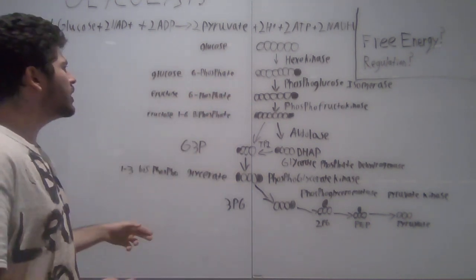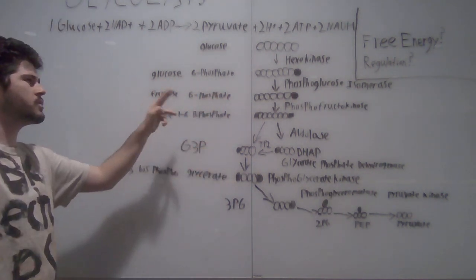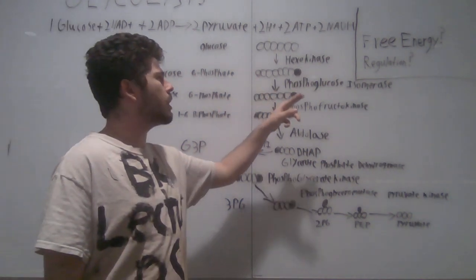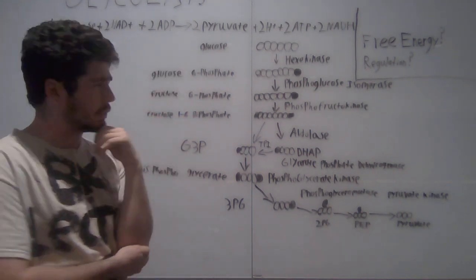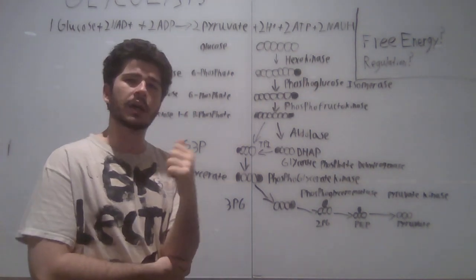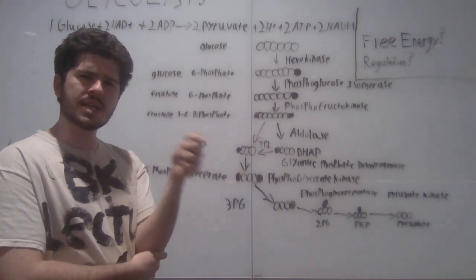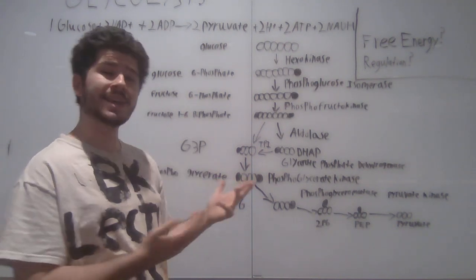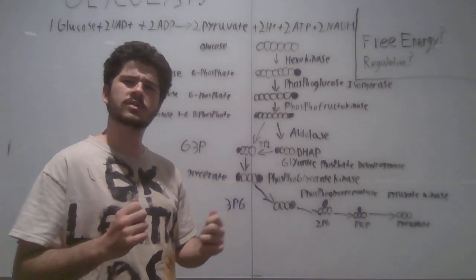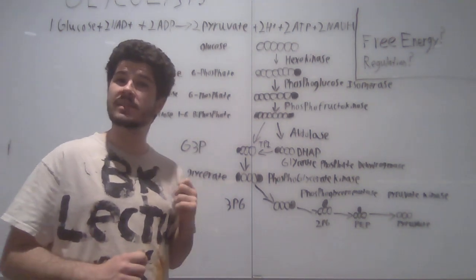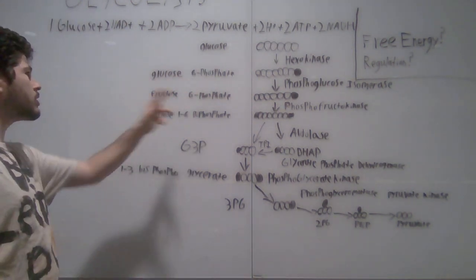Going to the next step, we have glucose-6-phosphate being turned into fructose-6-phosphate by phosphoglucose isomerase. Phospho, meaning has a phosphate group, glucose, meaning of glucose, and isomerase. I see the word isomer in there, which suggests to me that this enzyme will change a phosphoglucose into an isomer of itself. And we can see that as glucose-6-phosphate becomes its isomer, fructose-6-phosphate.